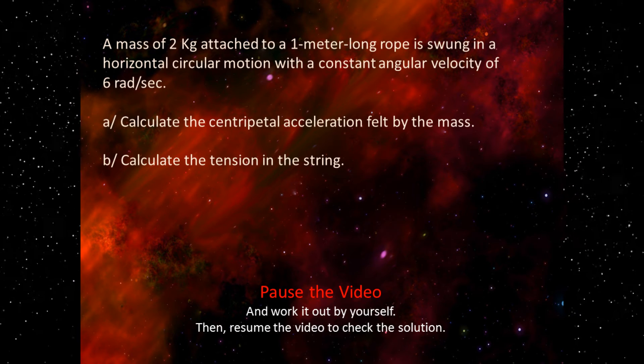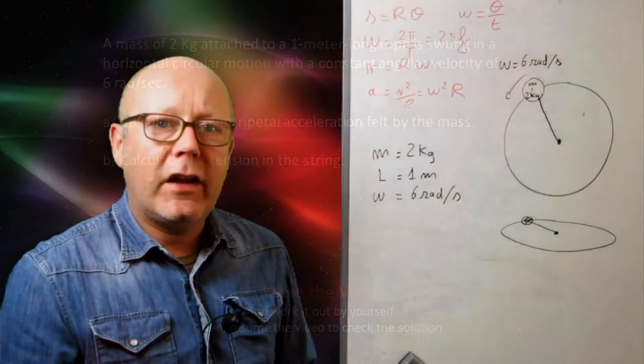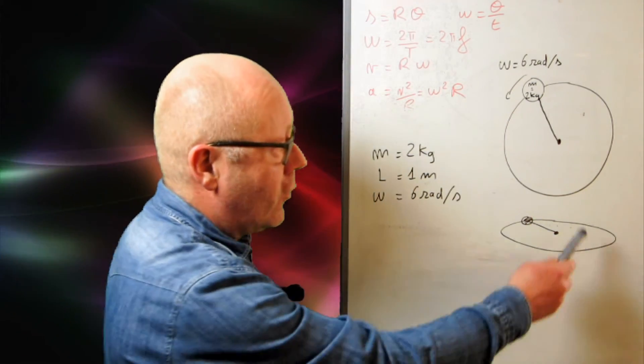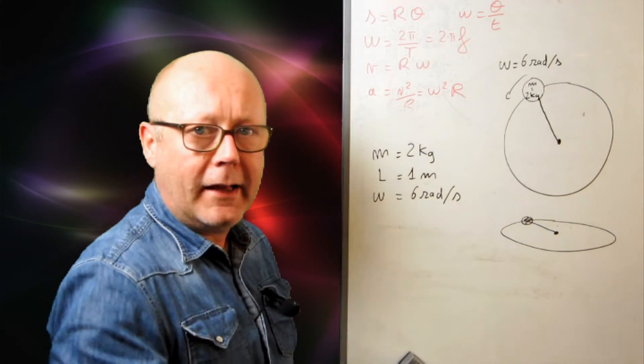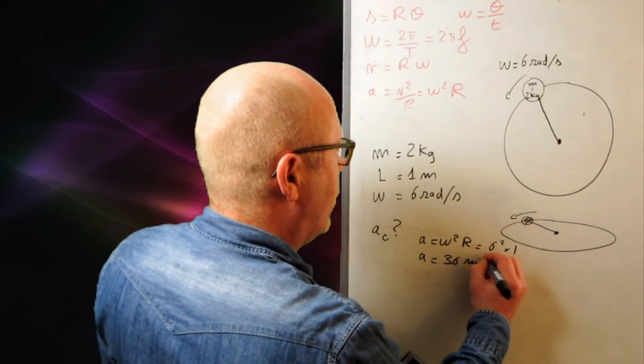Let's do an exercise. In this exercise, we have a mass attached to a string, and it's rotating in a circular motion. The circular motion is horizontal, so I'm actually throwing the mass in a horizontal way. So the first question is, what is the centripetal acceleration? Well, I can just apply the formula. a would be equal to omega square r, so 6 squared by 1. a would be equal to 36 m per second squared.